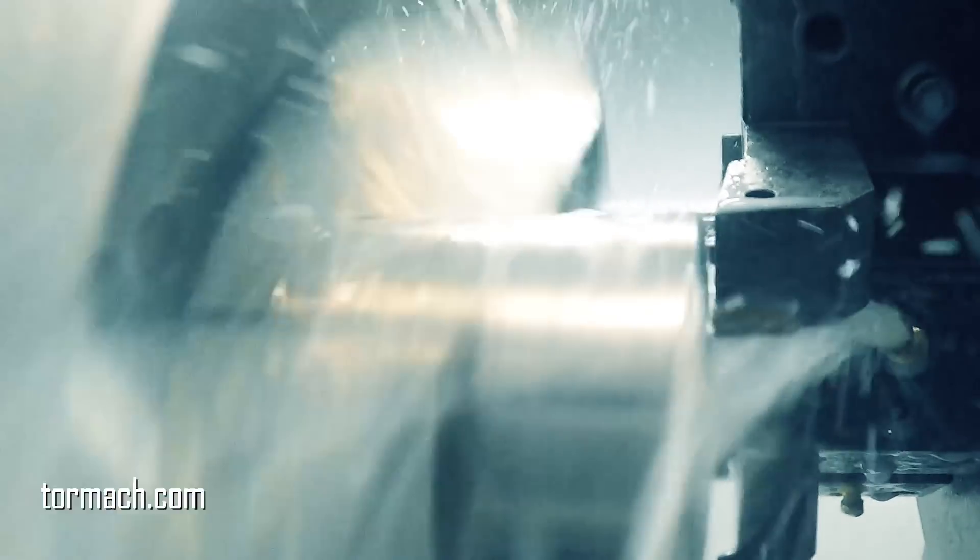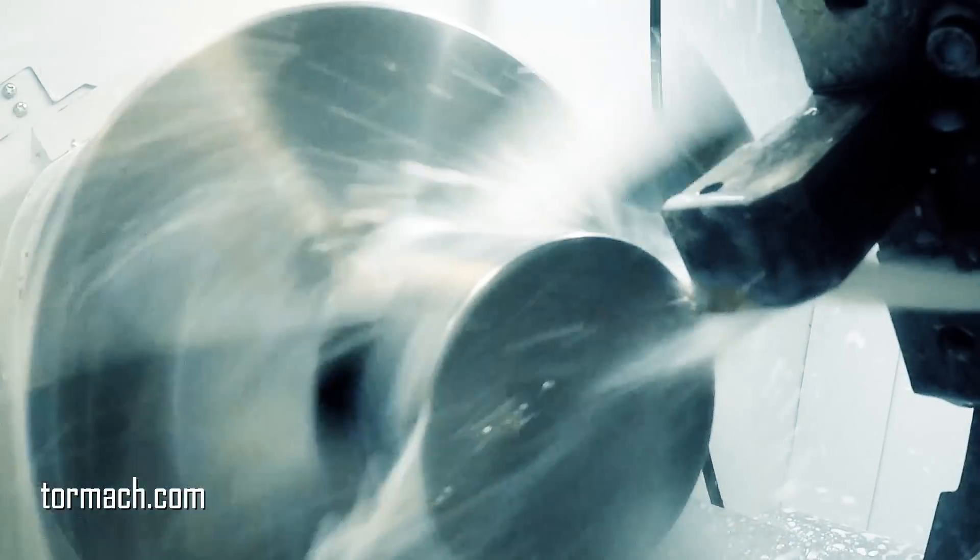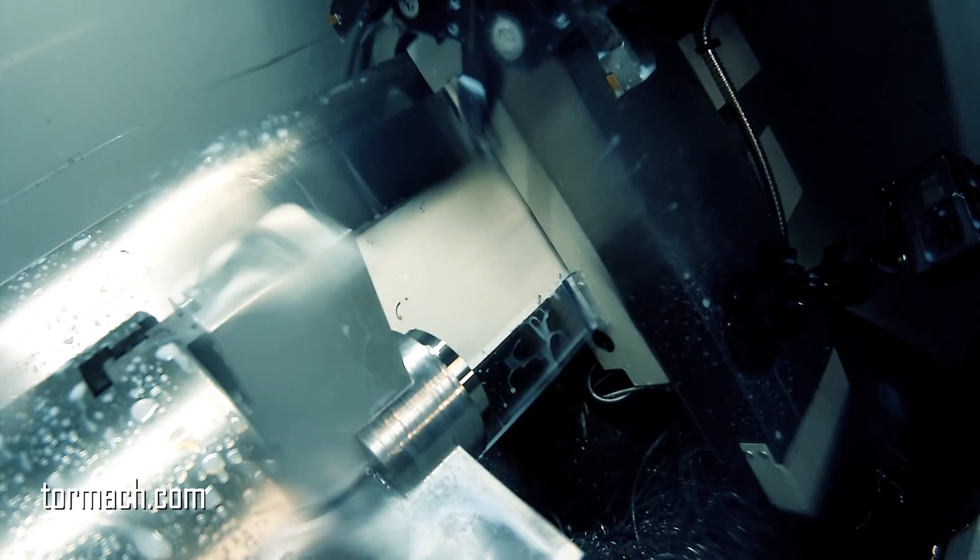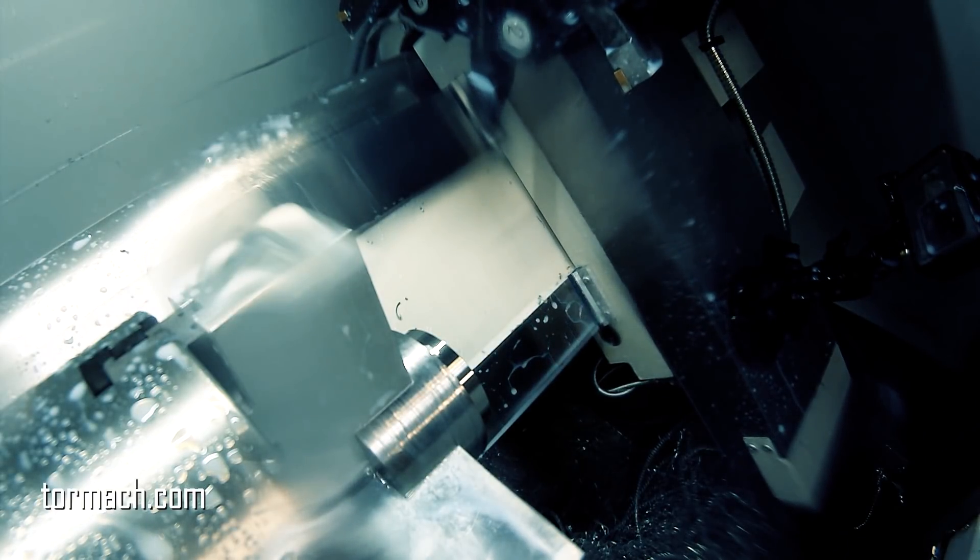We're running everything at right around 315 surface feet per minute with a 5 thousandths per revolution feed rate. We do a little bit of facing, we do some OD roughing here for the thread, the male thread portion of the part. We could have definitely gone a little faster with this, but it was running nice so I just kind of let it run and finish up.